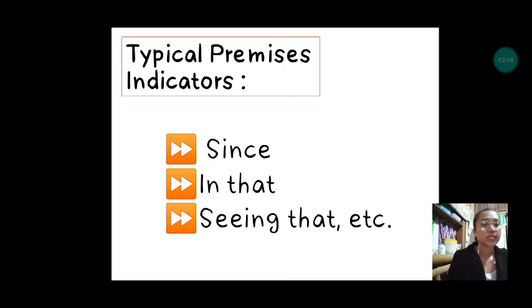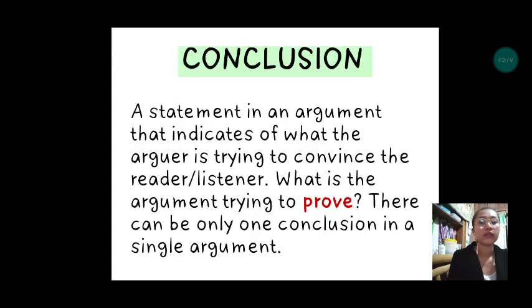These are the typical premise indicators used: 'since', 'in that', 'seeing that', among others. Next, what does conclusion in an argument mean? It is a statement in an argument that indicates what the argument is trying to convince the reader or listener. What is the argument trying to prove?